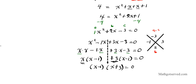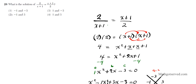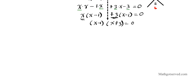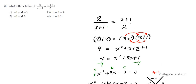Are we done? Are the answers negative 1 and 3 as option 2 suggests? Absolutely not — we use the zero product property to set each factor to 0. Setting x minus 1 equal to 0 gives x equals 1. Setting x plus 3 equal to 0 gives x equals negative 3. So the two solutions are 1 and negative 3, which is option number 3.